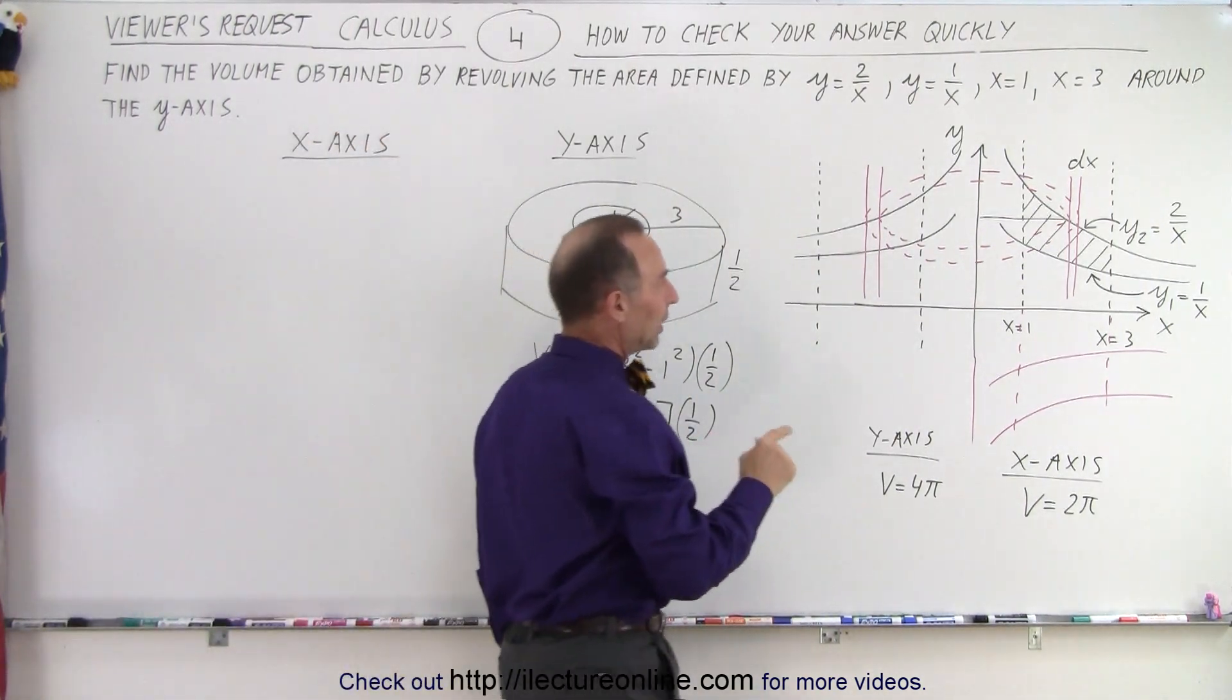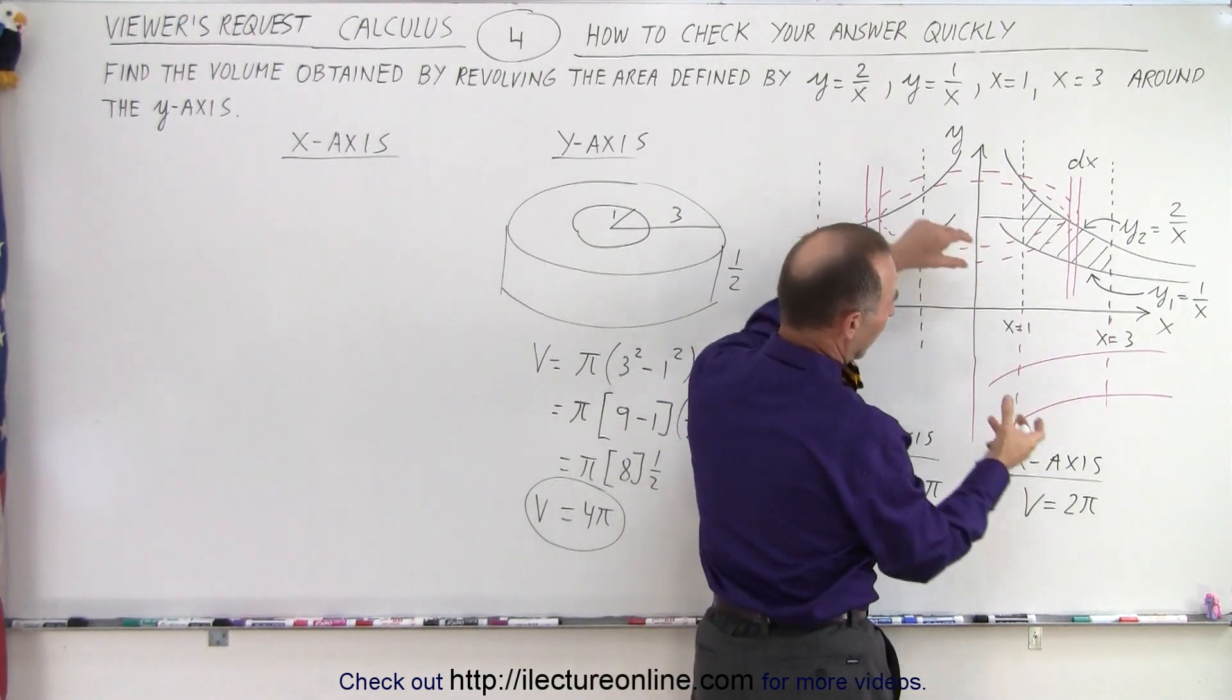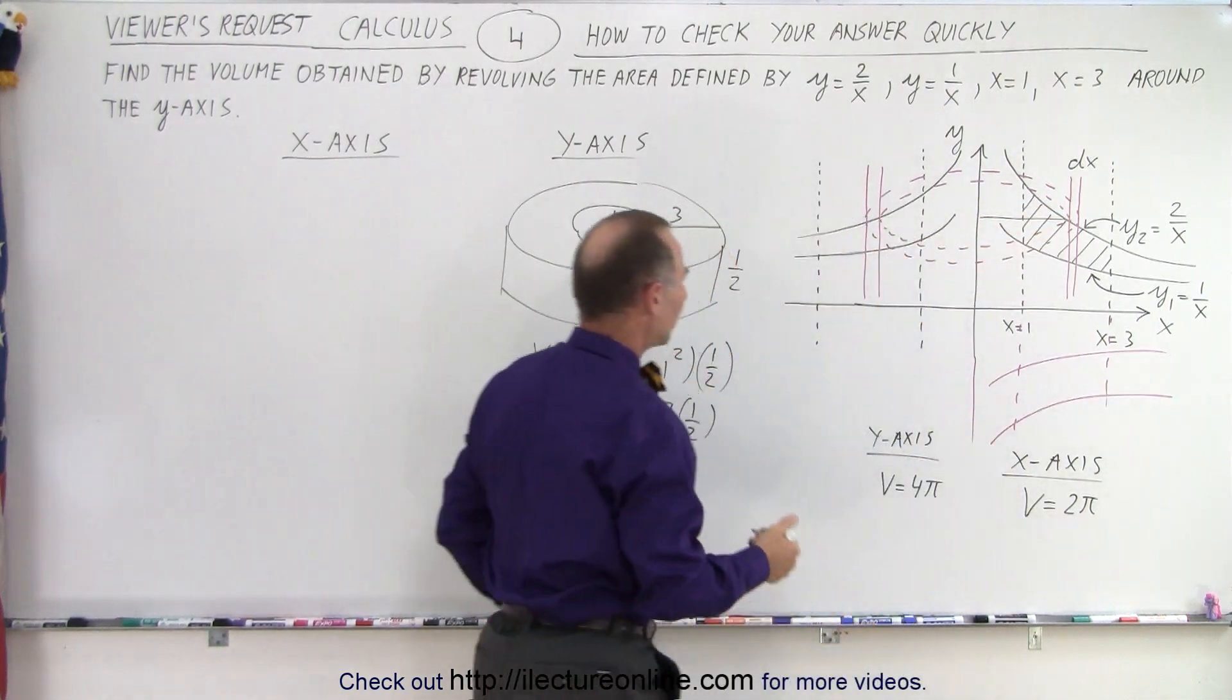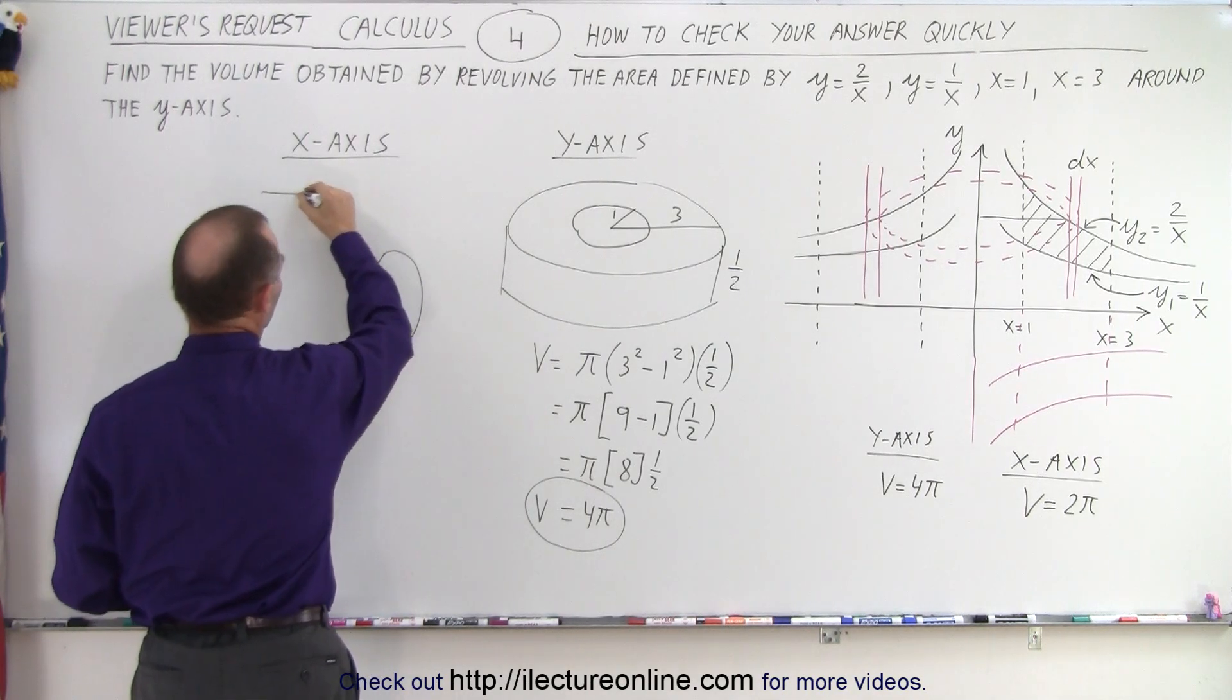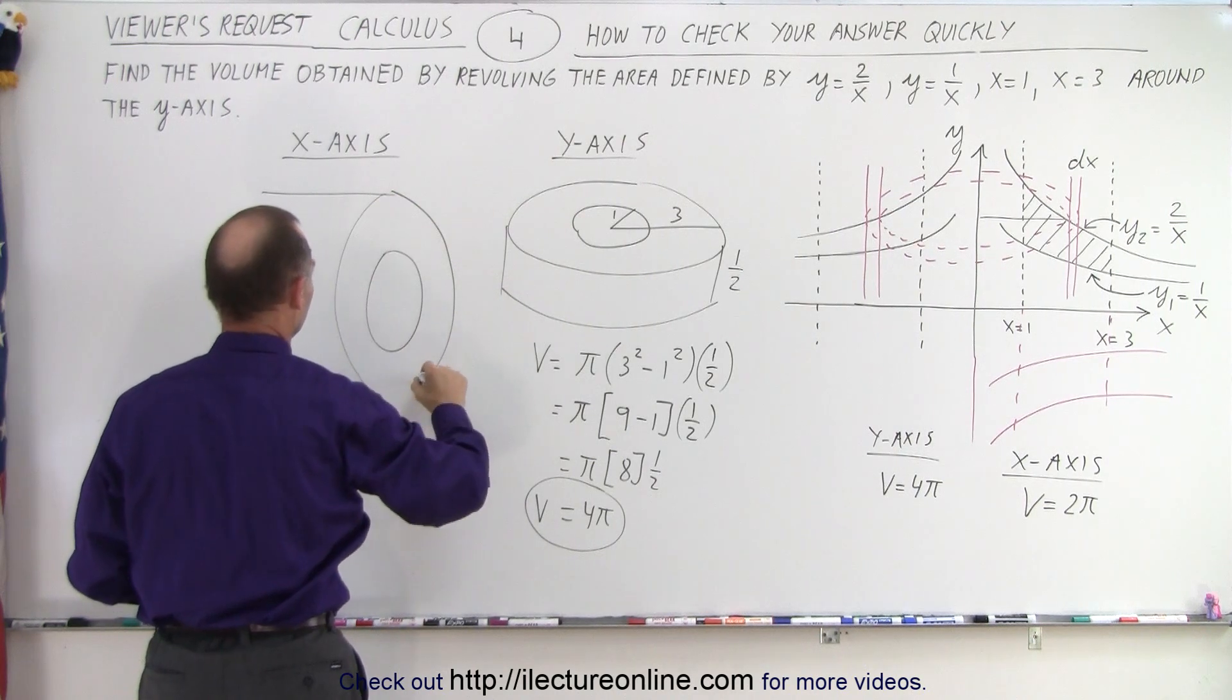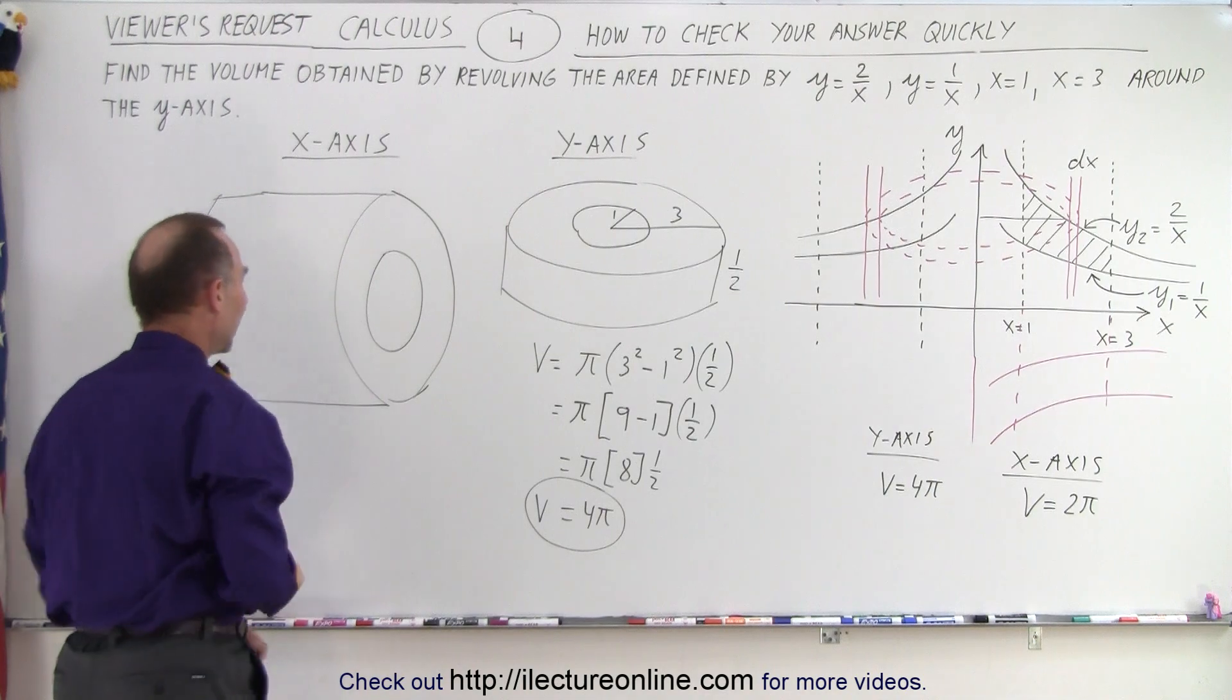Take a look and see what would happen if we now revolve it around the x-axis. So we end up with something like a curved vase. Then if we straighten it out, we end up with something that looks like kind of a cylinder like this. And that has a certain height. There we go. That looks better.